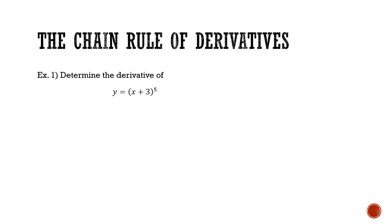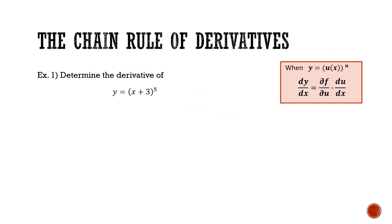What we're going to do instead is use the chain rule. The chain rule can be used when we have some function of x — denoted as u(x) — raised to the power of n. This is exactly what we've got here: a function of x, x plus 3, which we can call u(x), all raised to the power of 5.